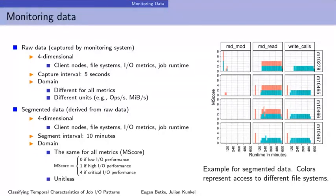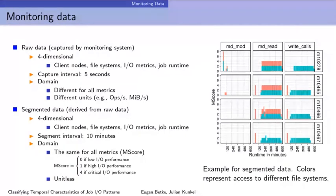The raw data comes from our monitoring system. We capture data from compute nodes and file systems for nine IO metrics and job runtime. Data is captured at an interval of five seconds. The captured data has a domain and units — for example, we can capture performance as megabytes per second, with values ranging from zero to five gigabytes per second.